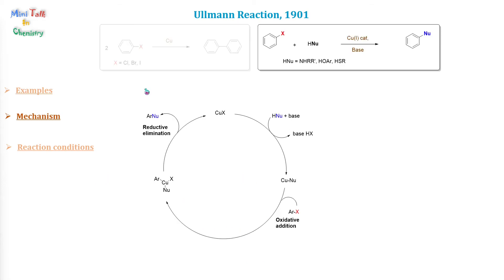Ullmann-type reactions proceed through a catalytic cycle in which copper coordinated with the nucleophile undergoes oxidative addition to form a copper(III) species, followed by reductive elimination to provide the desired product and regenerate the copper(I) species.